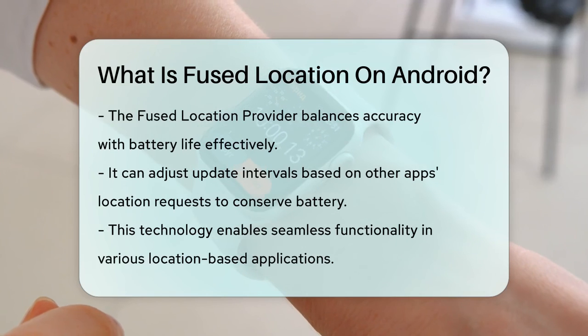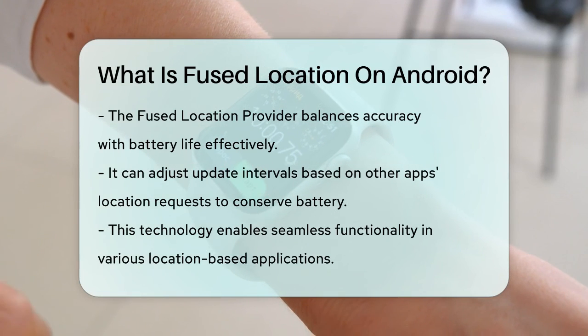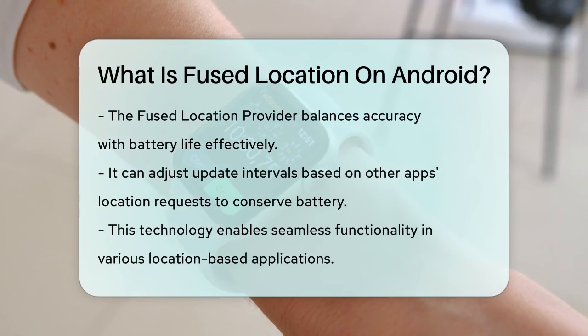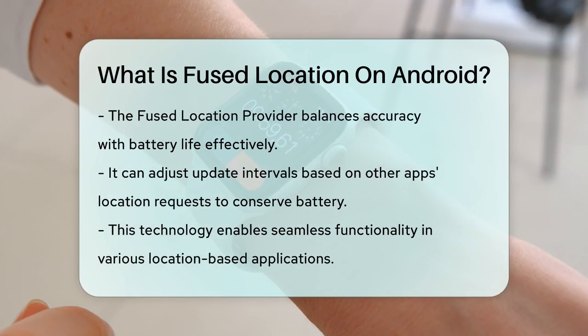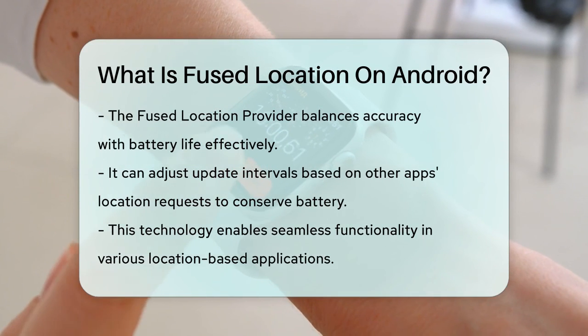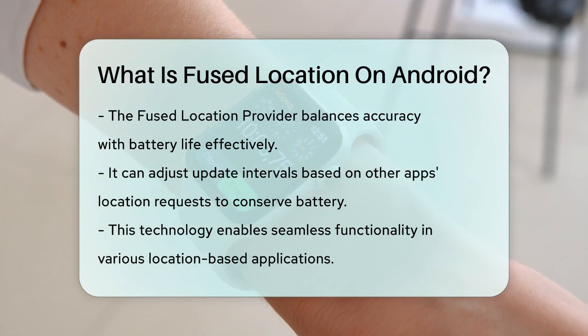In summary, the Fused Location Provider is a smart way for Android apps to get your location by combining different data sources and optimizing for both accuracy and battery life. It's what makes many location-based apps work so seamlessly.